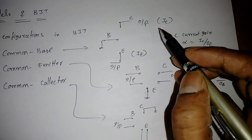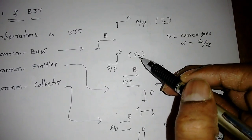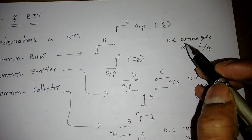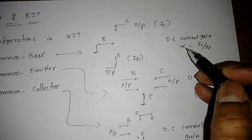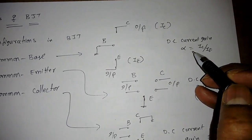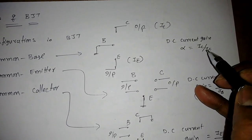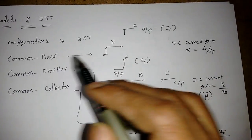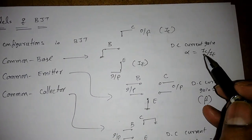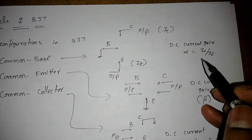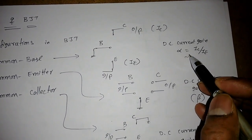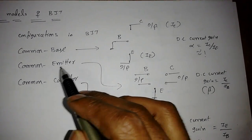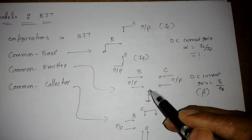So the output current is IC and the input current is IE. If we find the DC current gain, that is alpha, which is equal to IC divided by IE. That is why alpha is called the common base current gain, and IC/IE is approximately equal to 1.